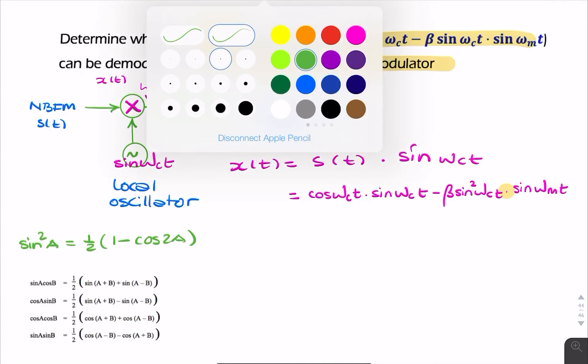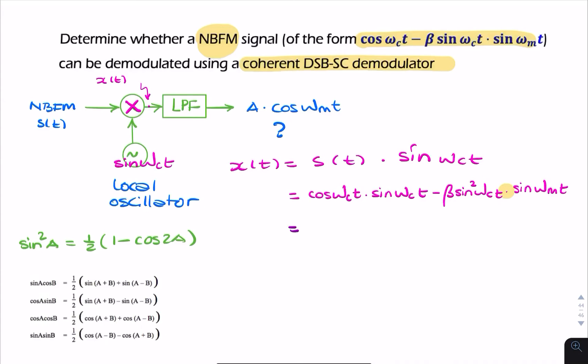Product of sine times cosine. So let's do it step by step. The first product, here we have cosine sine. Cosine sine, you can write that as half sine twice the angle, ½ sin 2ωct. And let me remind you of why that's the case. So you've got sin 2A equals 2 sin A cos A.